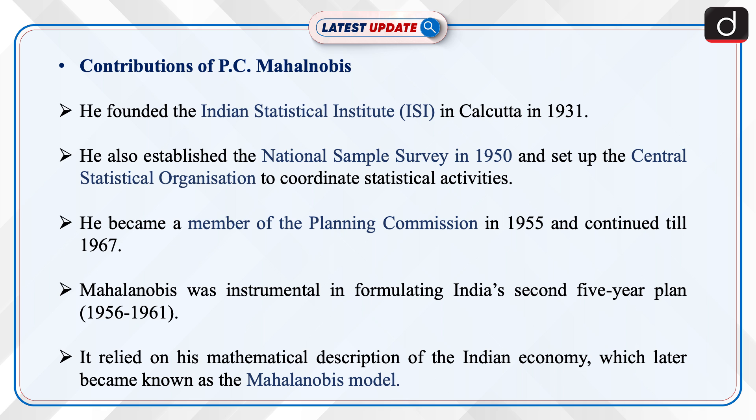He became a member of the Planning Commission in 1955 and continued till 1967. Mahalanobis was instrumental in formulating India's Second Five-Year Plan, from 1956 to 1961. It relied on his mathematical description of the Indian economy, which later became known as the Mahalanobis Model.